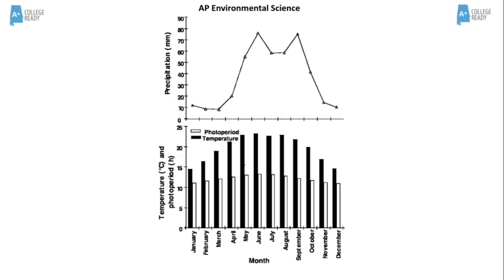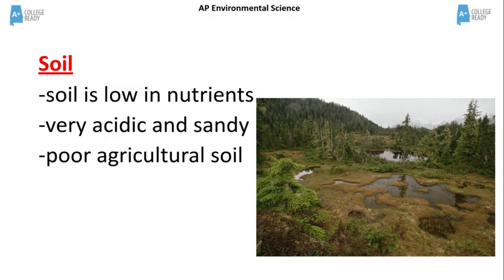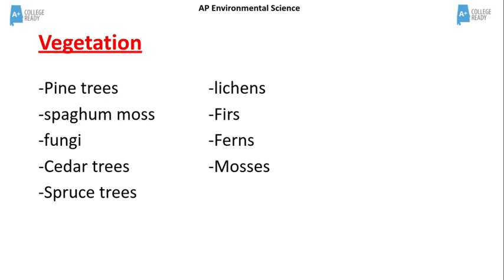The taiga soil is low in nutrients, very acidic and sandy, therefore it isn't very good for agriculture. The plant types include pine trees, sphagnum moss, fungi, cedar trees, spruce trees, lichens, firs, ferns, and mosses.